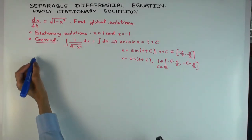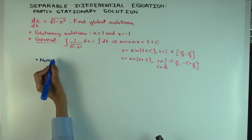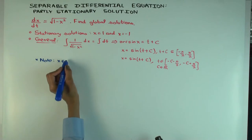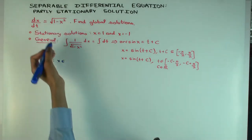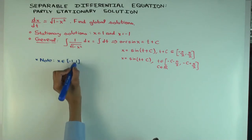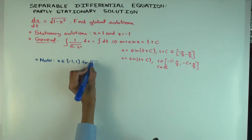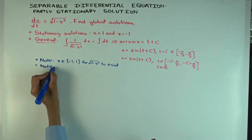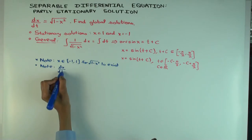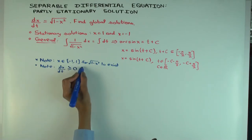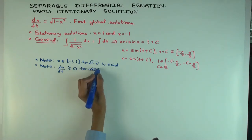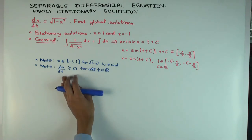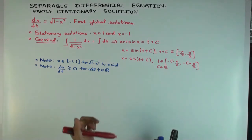So first of all, note, x has to remain in what interval? For the right side to make sense, x has to be in what interval? In (-1, 1). Okay, good. For √(1 - x²) to exist. Okay, good. And what can you say about dx/dt, the sign of dx/dt? Well, it's greater than or equal to 0 for all x, for all t. Okay, so it's a non-decreasing function. It could be constant or increasing, but it doesn't go down. Okay, and it takes value between -1 and 1.